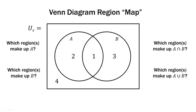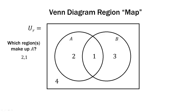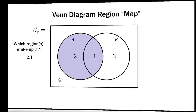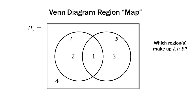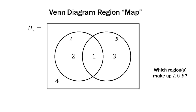Which regions make up A? That's regions 2 and 1 — those make up all of the circle A. We shade that in. Which regions make up B? That's 1 and 3, so we shade it in like that. Which regions make up A intersect B? That is region 1 there in the middle, so we shade it in. Which regions make up A union B? The union is anything that's in A, B, or both — so it's regions 1, 2, and 3. We shade it like that.